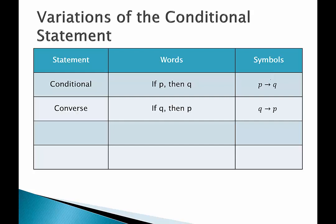Next we have the converse. The converse is when we switch the hypothesis with the conclusion, so it becomes if Q then P. The inverse is when we negate P and Q, so if not P then not Q. And lastly the contrapositive — it's when we negate and we switch. So the contrapositive is not Q then not P.